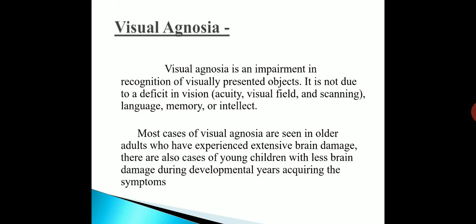Let us discuss visual agnosia. Visual agnosia is an impairment in recognition of visually presented objects. It is not due to a deficit in vision, acuity, visual field or scanning, language, memory, or intellect.